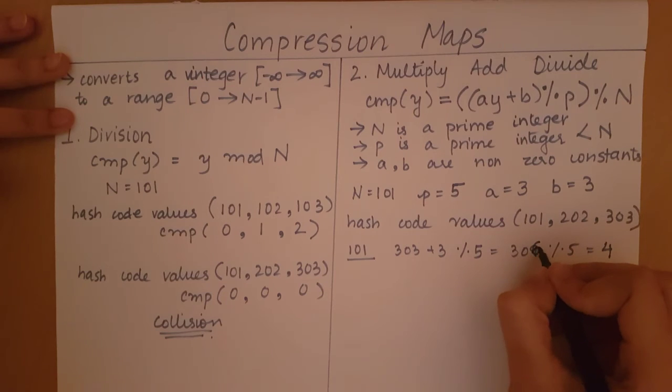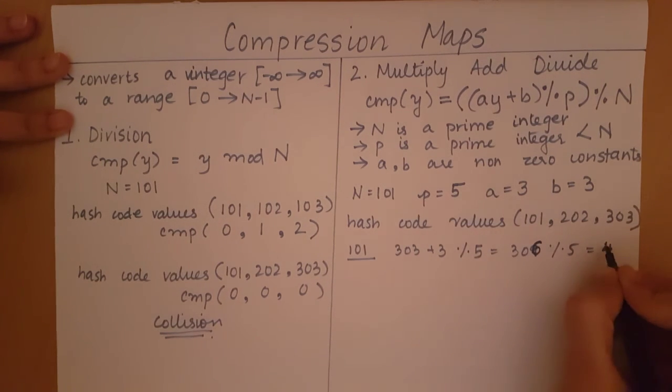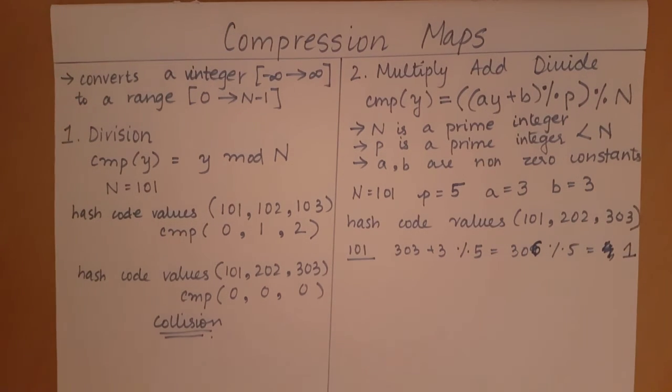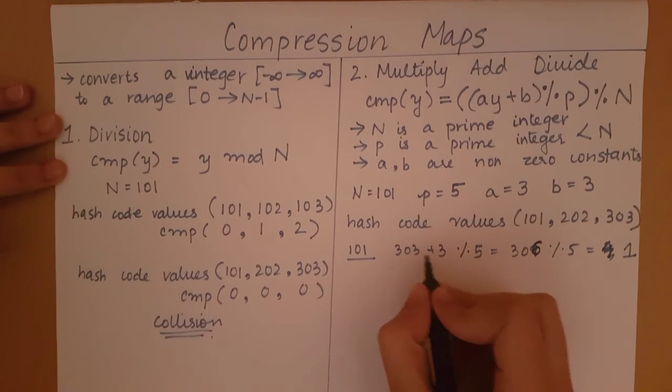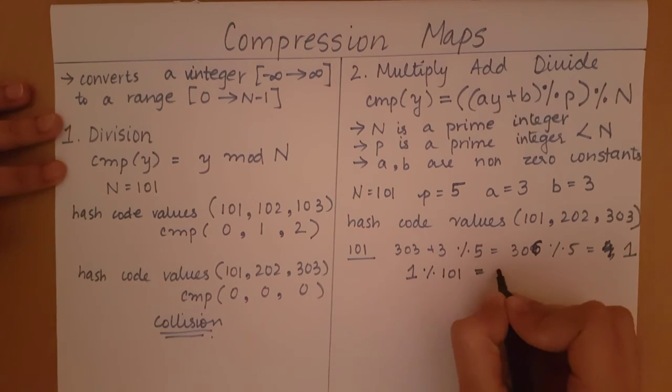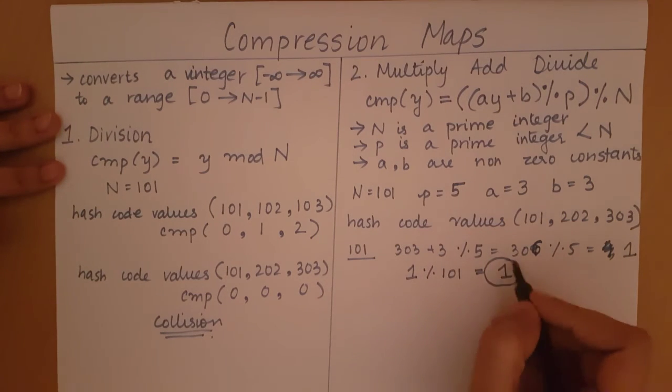Sorry, this is not going to give me 309. It's going to give me 306. 303 plus 3 is equal to 306. 306 mod 5 will give me 1. So now we have the value of a times y plus b mod p. So now we do that value mod n. So 1 mod 101, which is equal to 1. So the compression of 101 is going to be 1.